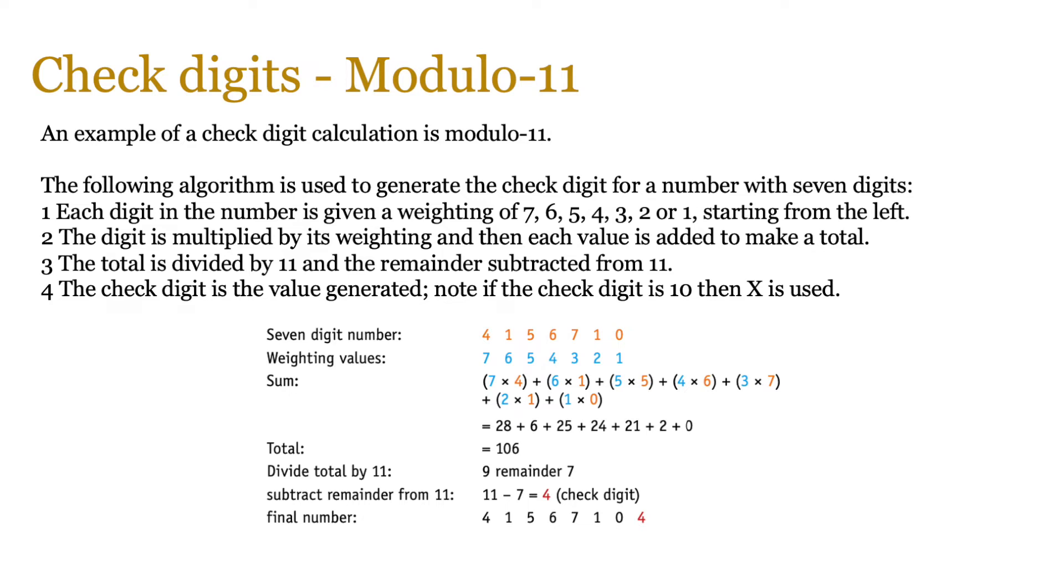Now, on screen you see an example. You've got a seven-digit number 4156710. We give it the weighting value 7654321. We then simply multiply them with the value: 7 times 4, 6 times 1, 5 times 5, and so forth. Add them all up together, gives us 106. We divide the total by 11, which gives us 9 remainder 7, and we take that 7 and subtract it from the original 11, which now gives us 4 as the check digit.